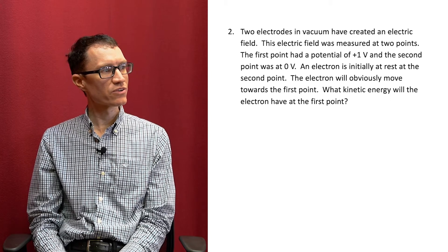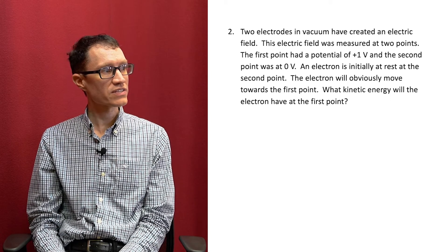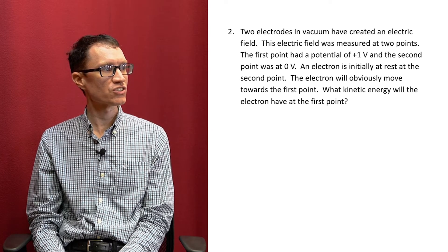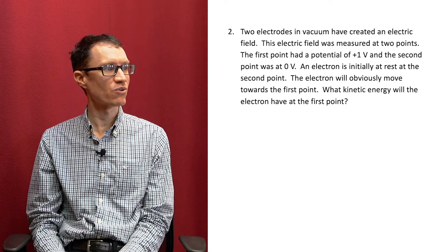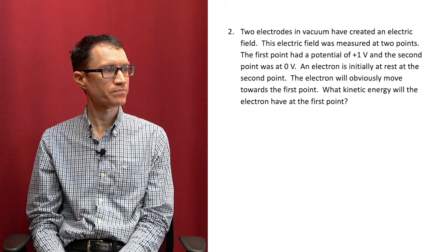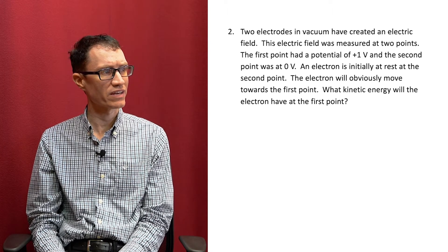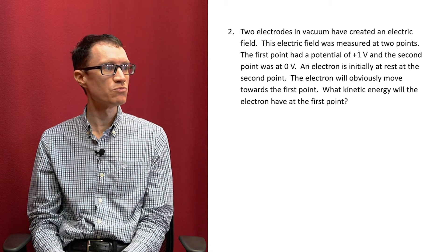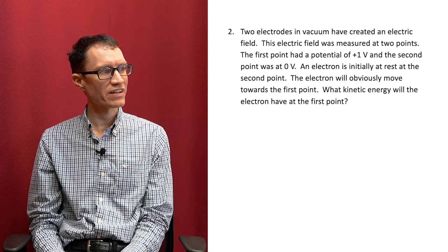Let's take a look at the second problem. Two electrodes in vacuum have created an electric field. This electric field was measured at two points. The first point had a potential of positive 1 volt, and the second point was at 0 volts. An electron is initially at rest at the second point. The electron will obviously move towards the first point. What kinetic energy will the electron have?